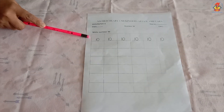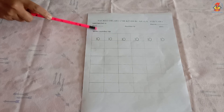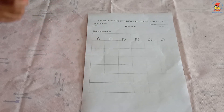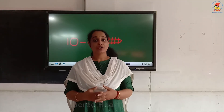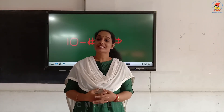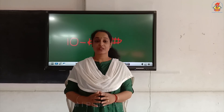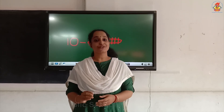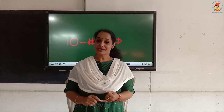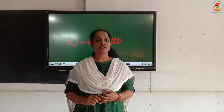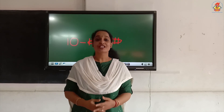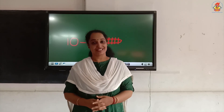The last worksheet is for writing number ten. You have to write number ten in the given boxes. Children, I hope you all understood how to make a bundle with ten. There is a small activity: collect ten pencils or crayons and try to make a bundle of ten. Hope you all enjoyed. See you in the next class. Bye!